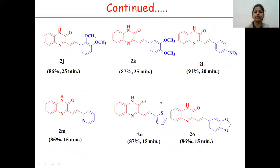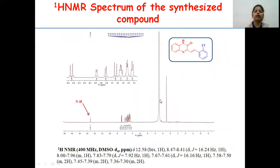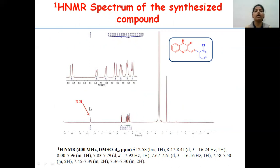This is the substrate scope of our reaction. This is the proton NMR of the synthesized compound. The characteristic peak at about 12.5 ppm corresponds to the NH proton, and this spectrum is in good agreement with our proposed structure.